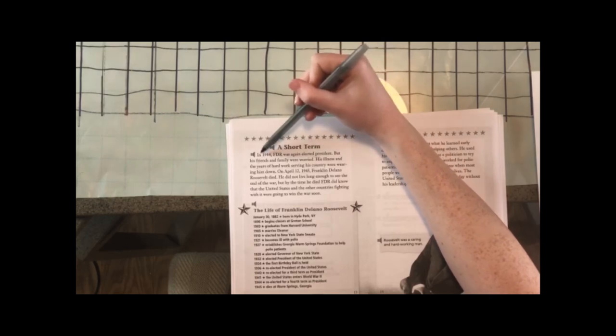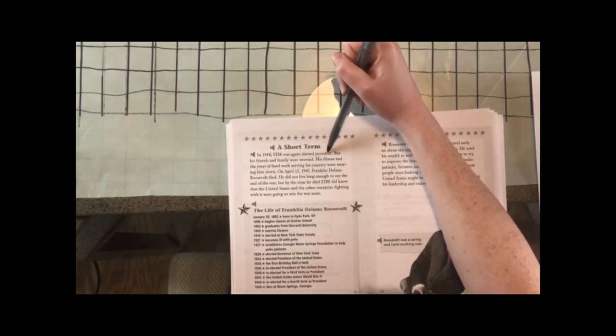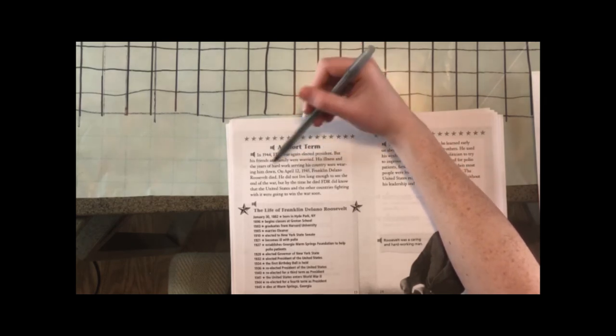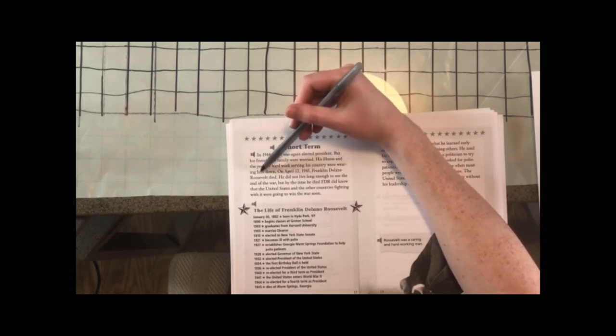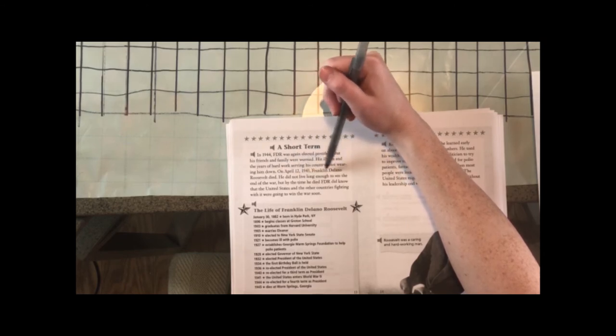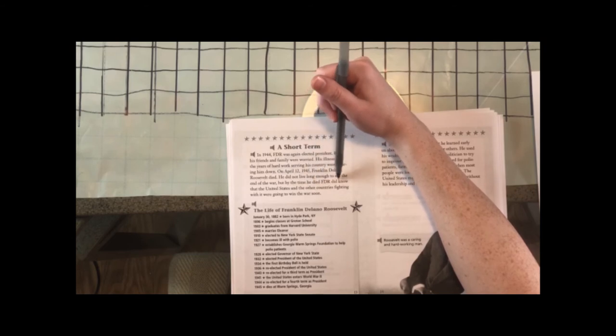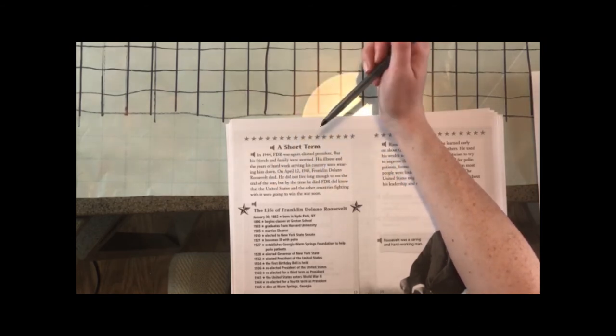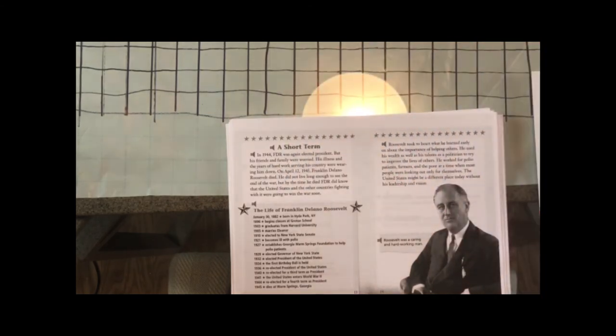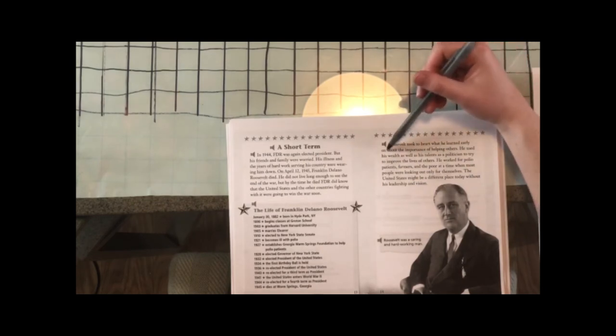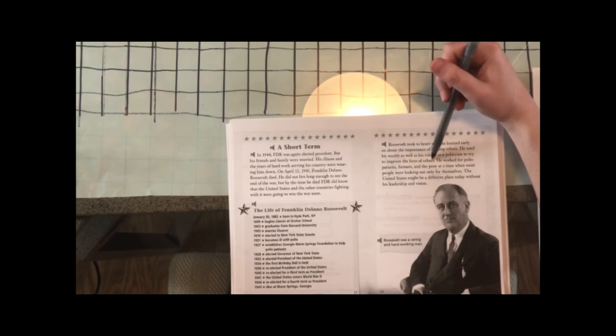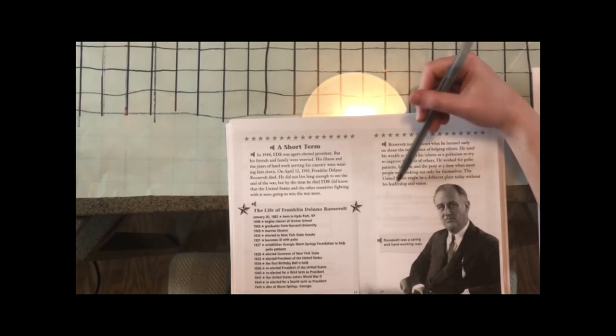A short term. In 1944, FDR was again elected, but his friends and family were worried. His illness and the years of hard work serving his country were wearing him down. On April 12th, 1945, Franklin Delano Roosevelt died. He did not live long enough to see the end of the war, but by the time he died, FDR did know that the United States and the other countries fighting with it were going to win the war. Roosevelt took to heart what he learned early on about the importance of helping others. He used his wealth as well as his talents as a politician to try to improve the lives of others. He worked for polio patients, farmers, and the poor at a time when most people were looking out only for themselves. The United States might be a different place today without his leadership and vision.